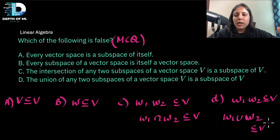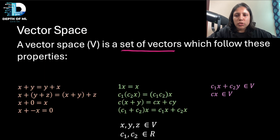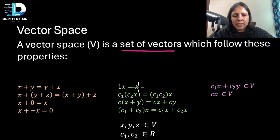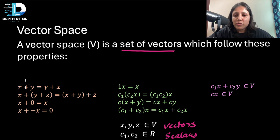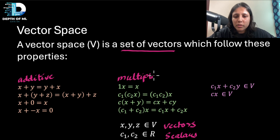To solve this question you need to understand what a vector space and a subspace are — once you do, this becomes very easy. A vector space is a set of vectors with special properties. X, Y, Z are vectors from the vector space V, and C1, C2 are scalars. There are three sets of properties: additive properties, multiplicative properties, and closure properties.